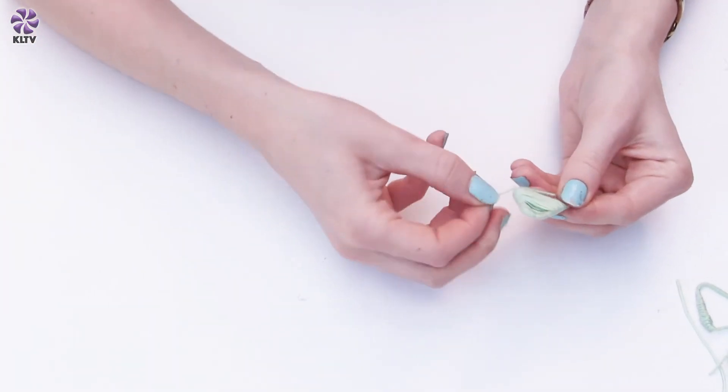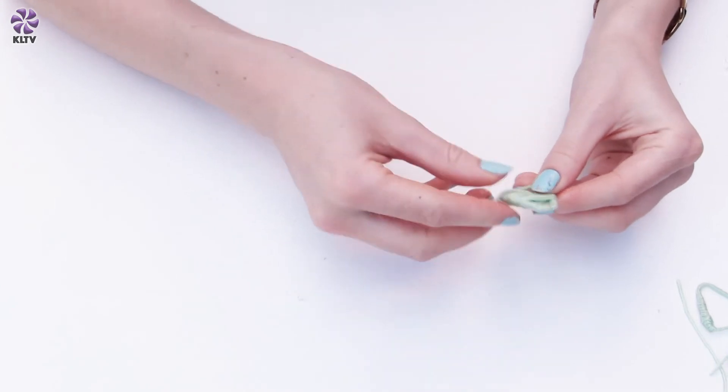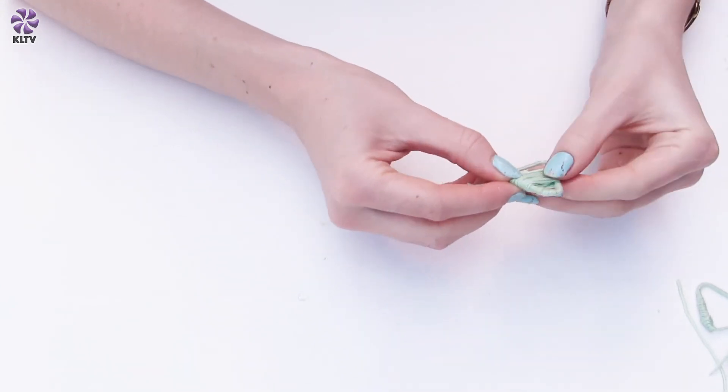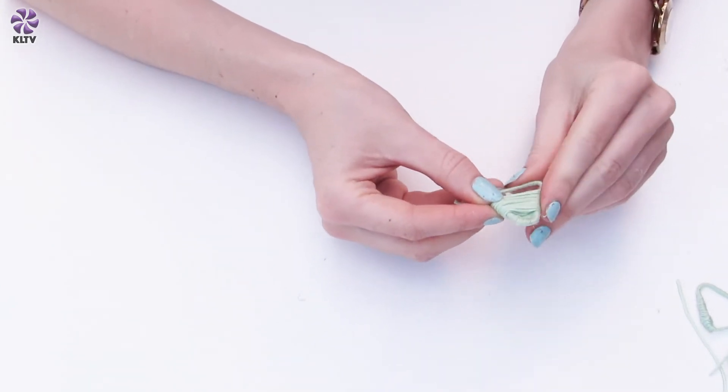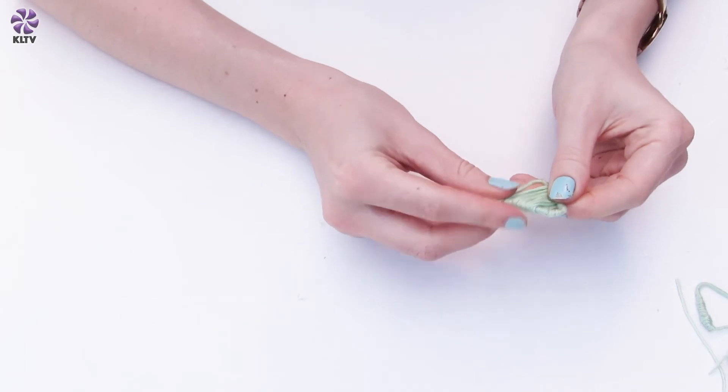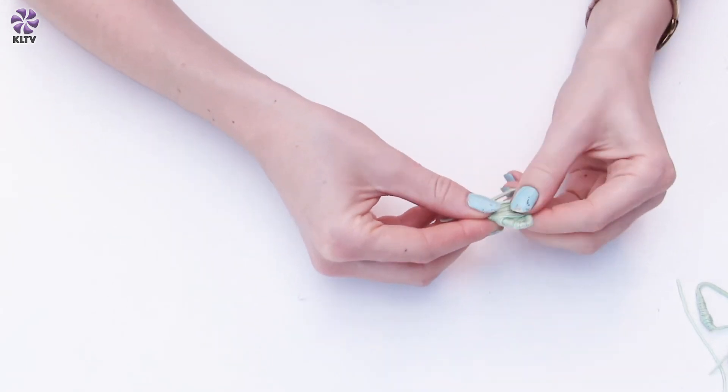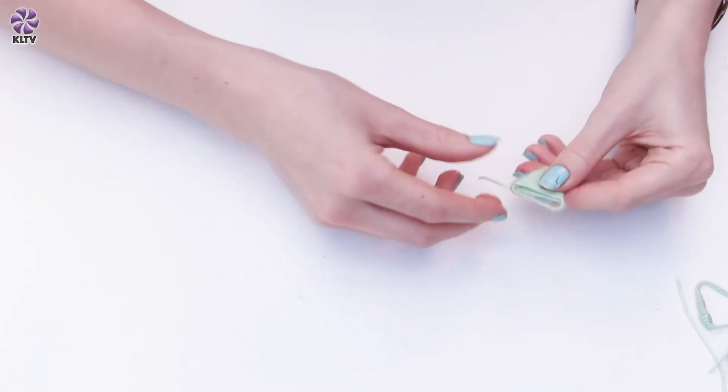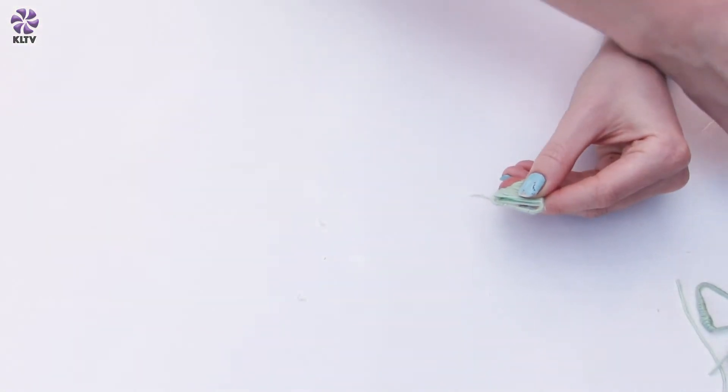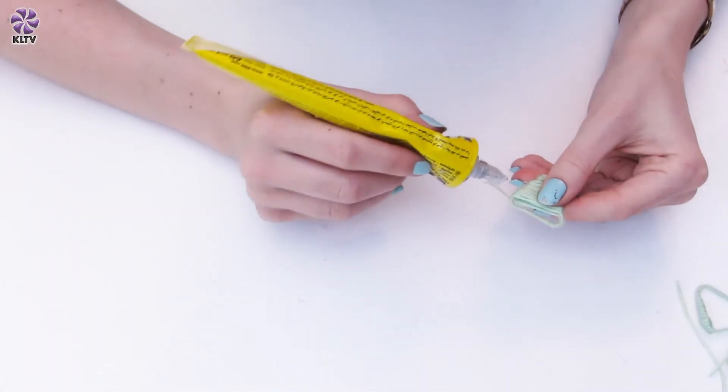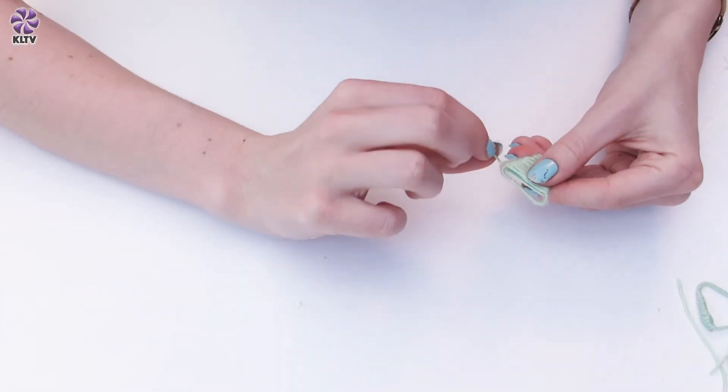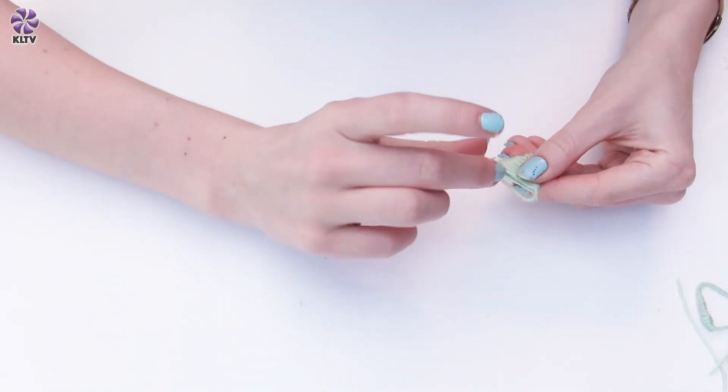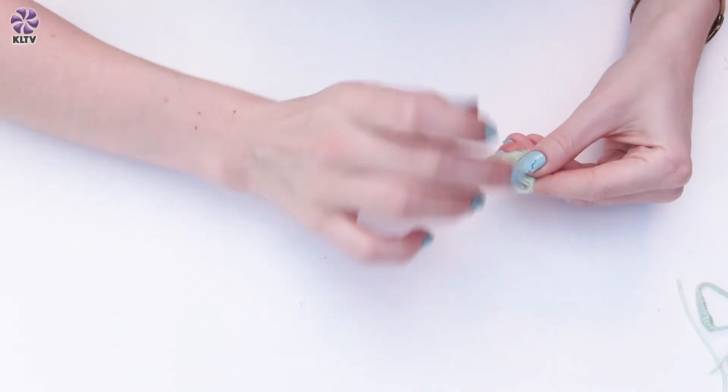So around there, and then once you've got that section sorted, you can move it around a bit, check it's all in the right position you want. And then you just want to come to the back, take your UHU glue again and apply that in place, and then just smooth that off.